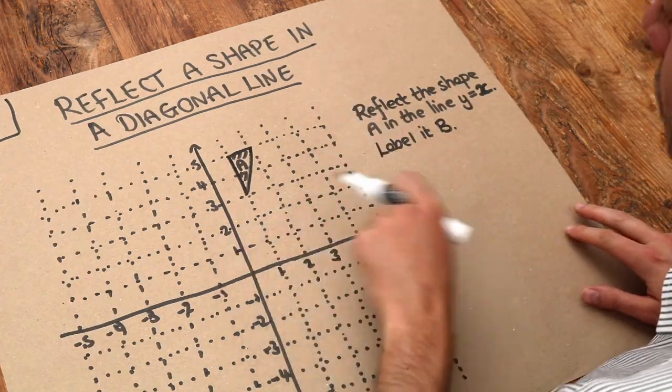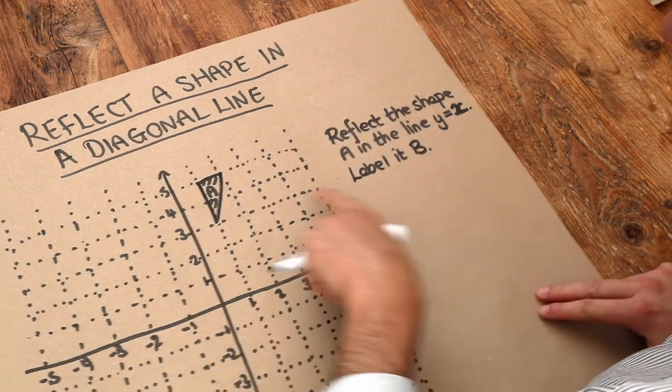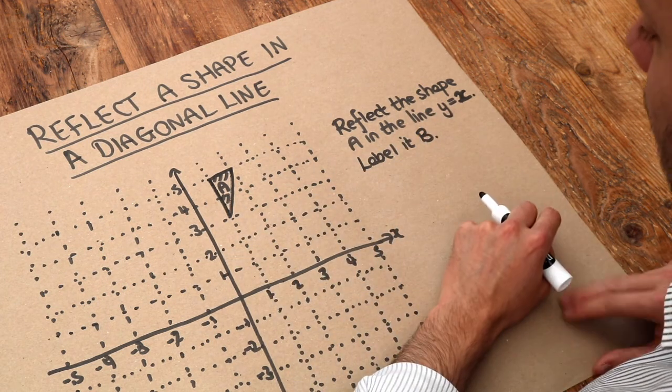Sometimes a line is drawn for you but sometimes it might be that you're given the equation of the line. So here we want to reflect this shape in the line y equals x.